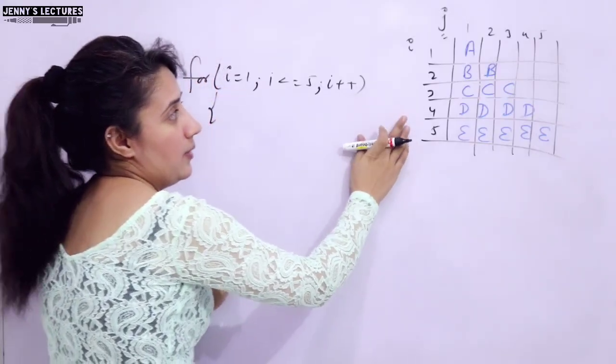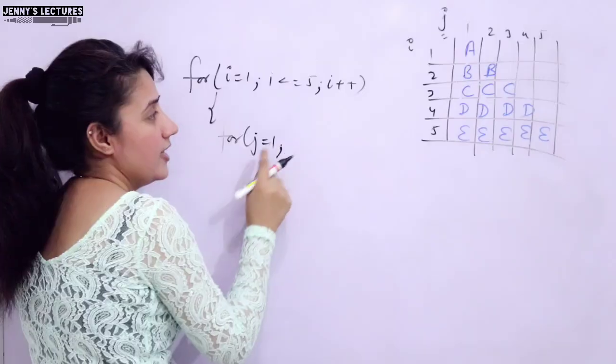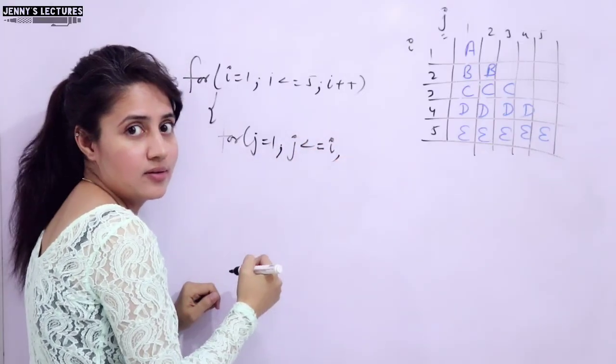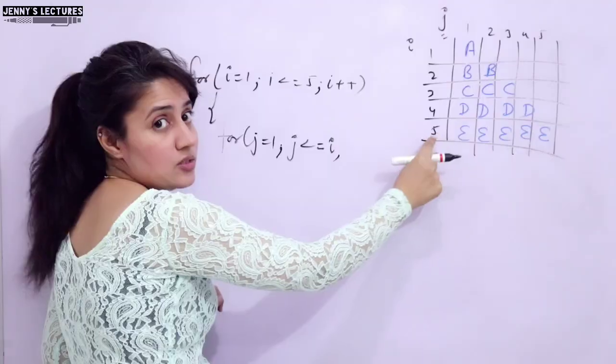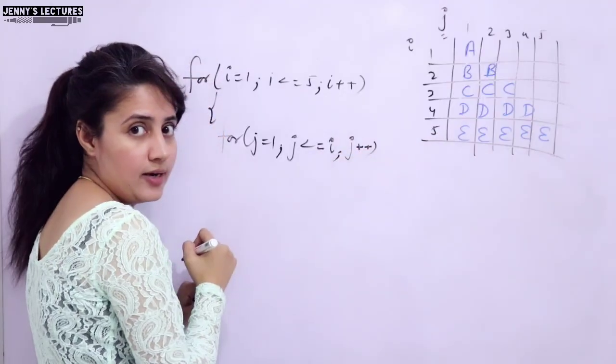I hope you are getting my point. The inner loop would be executed from j = 1 and j <= i. I hope you are getting this relation, why j <= i, and j++.